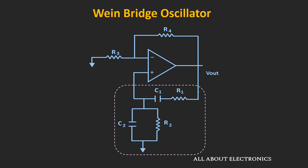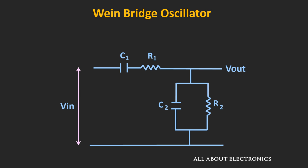Here, the op-amp is used in the non-inverting configuration, and the positive feedback is provided to this op-amp through this RC feedback circuit. Now, if you see this RC circuit, it consists of two RC networks — one is the series RC network and the other one is the parallel RC network. This series RC circuit acts like a high-pass filter, while this parallel RC circuit acts like a low-pass filter.